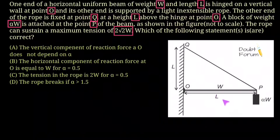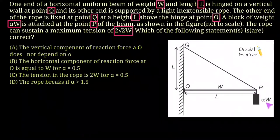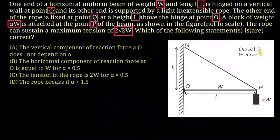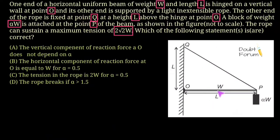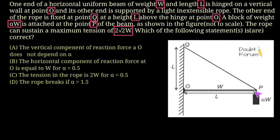Looking at the given figure: the length of the beam is L, the weight is W, one end of the beam is hinged to the vertical wall at point O. The other end is supported by a light inextensible rope, and a weight alpha·W is suspended at point P. The first force to mark is the weight of the beam, which acts at the middle since the beam is uniform, at a distance L/2 from O.